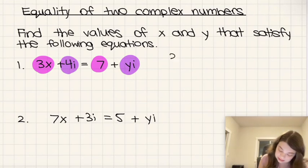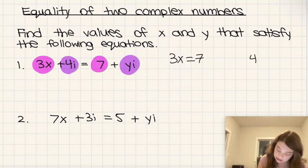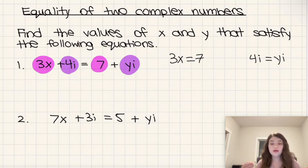So that means that 3x must be equal to 7, and also 4i must be equal to yi. So all we need to do to solve for x and y is solve these two equations.